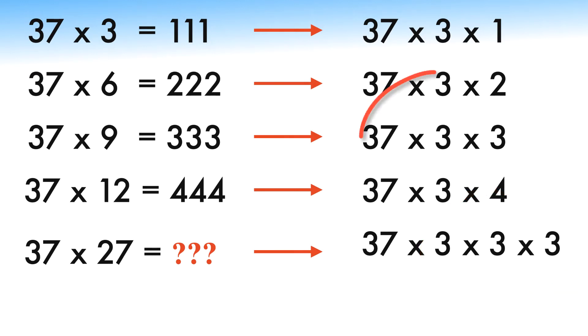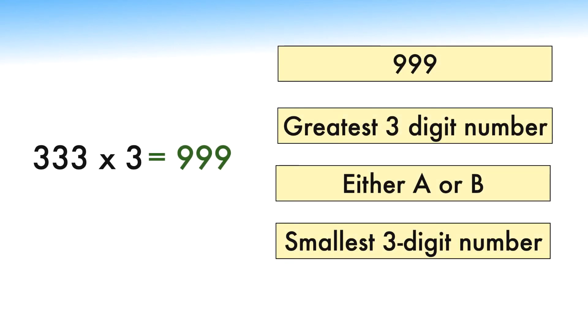Looking at our above equations, we already have 37 times 3 times 3, which is equal to 333. Which implies 37 times 27 equals 37 times 3 times 3 times 3, and 37 times 27 becomes 333 times 3. And finally, after solving this, 37 times 27 equals 999. We have now calculated the value of 37 times 27, which is 999.